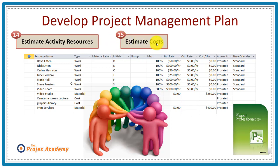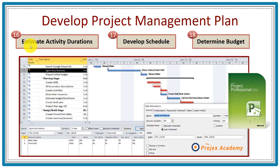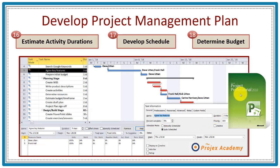Step fifteen is estimate the costs. You would consider each activity and estimate the work effort involved, plus any tools and equipment, to come up with the total cost — done by assigning the relevant resources within Microsoft Project to each activity. Step sixteen is estimate activity durations. What is often misunderstood is that you don't simply look at a task and estimate its duration — that would be a guess. Instead, you assign the work effort and those available to carry it out, and Microsoft Project will automatically calculate the start and finish dates.